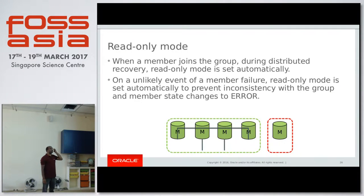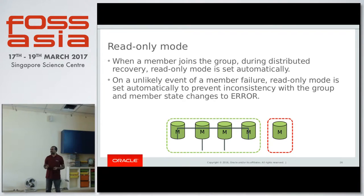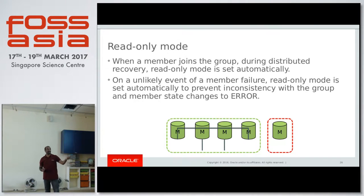There is a read-only mode concept: if something goes wrong on a server, you don't want that to affect the group. The moment the group replication plugin detects something wrong on a master, it puts that server into read-only mode so no write requests are served there. Until the DBA resolves the issue and executes 'start group replication' again, no write requests will be served on that node. The DBA fixes the problem and then issues start group replication, which puts it back into recovery mode, with one member acting as donor, until it's back in sync with the rest.